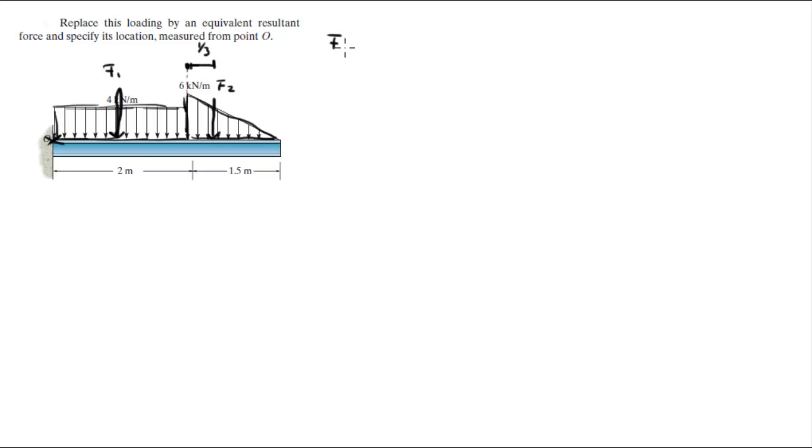So let's find the forces first. F1 is equal to the area of the rectangle, which has a width of 2 meters times a height of 4 kilonewtons per meter, so that will make F1 equal to 8 kilonewtons.